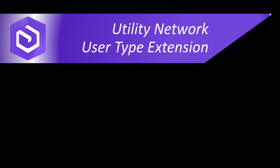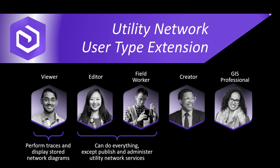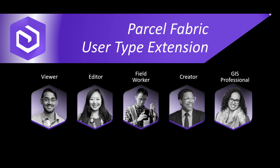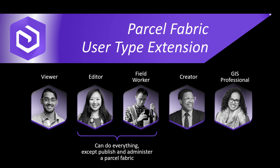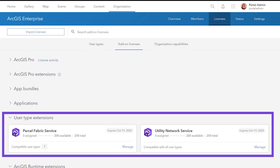You might be wondering how these user type extensions differ by user type. All user types have the ability to view and query the utility network. Viewers can perform traces and display stored network diagrams. Editors and field workers can do everything except publish and administer utility network services. Creators and GIS professionals can do everything. It's similar for the parcel fabric user type extension — editors and field workers can do everything except publish and administer a parcel fabric, while creators and GIS professionals can do everything. These user type extensions can easily be added through the enterprise portal.